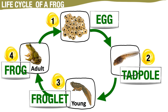The life cycle of a frog repeats again when the female adult frog lays its eggs in water again. To sum it up, the life cycle of a frog has four stages: egg, tadpole, the young froglet, and the last stage, the adult frog.